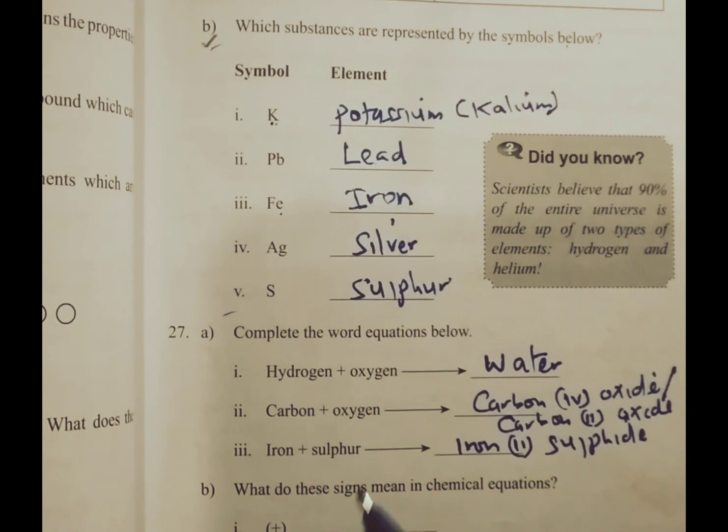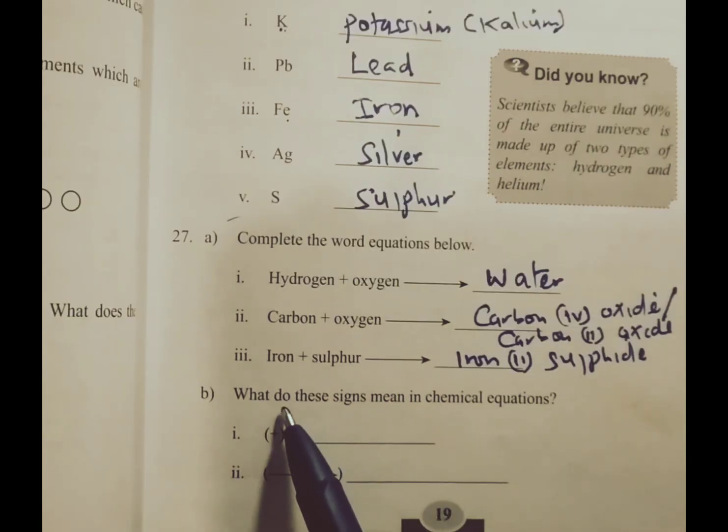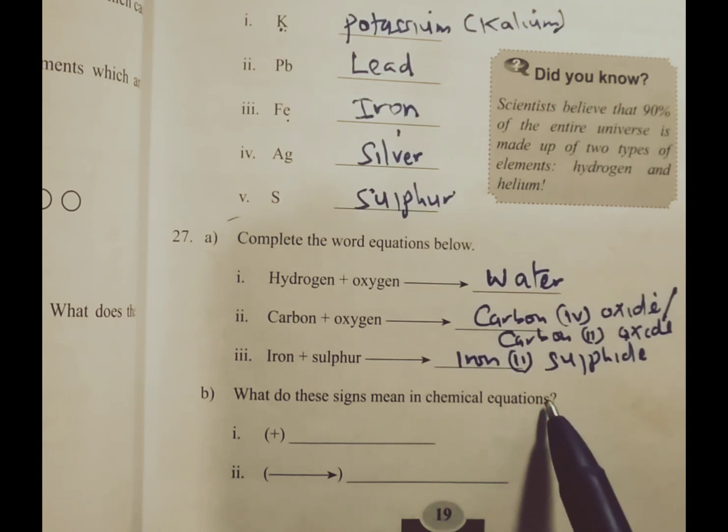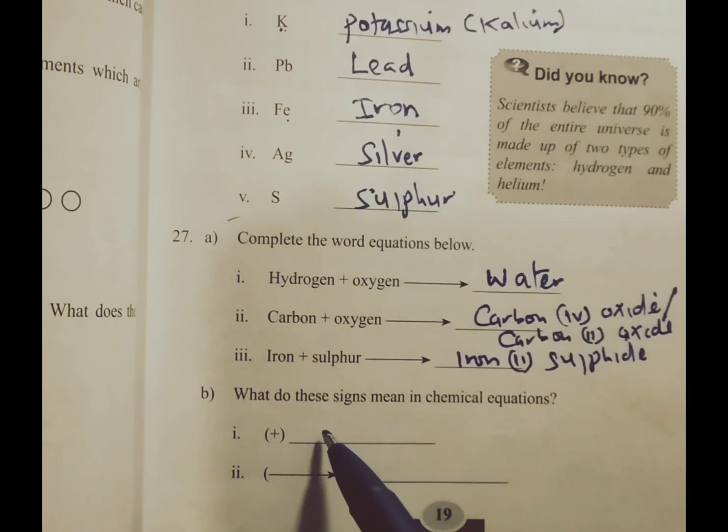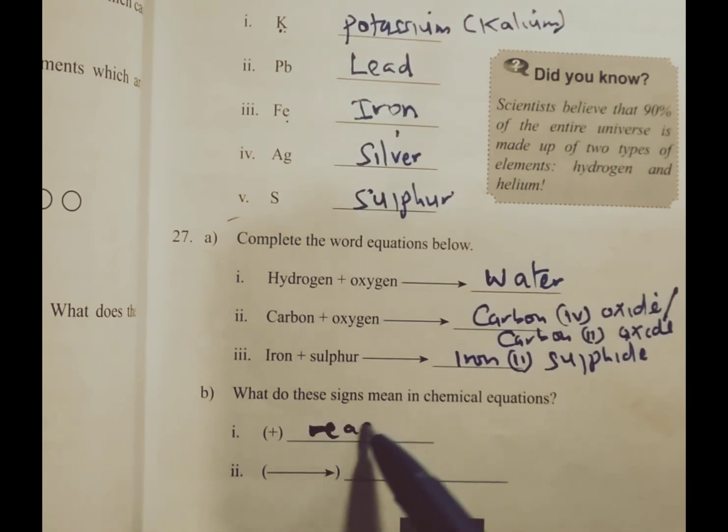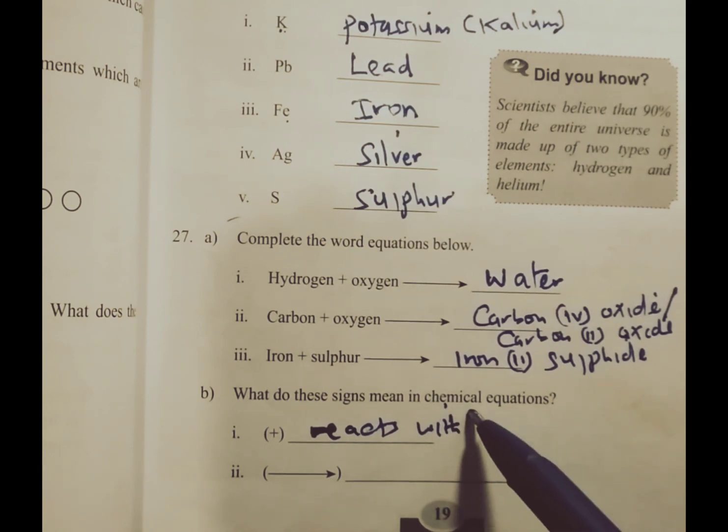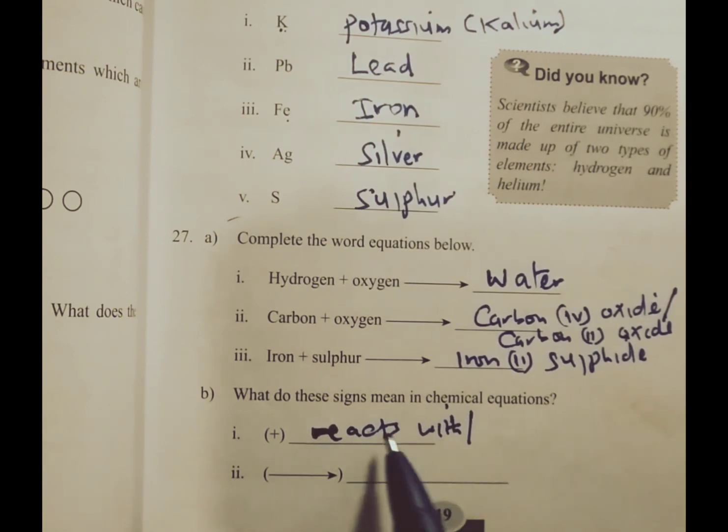Then of course the last part of the question. What do these signs mean in a chemical equation? If you see plus, it means reacts with, or add to.